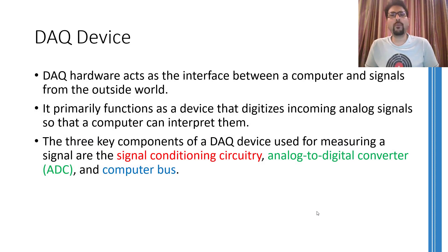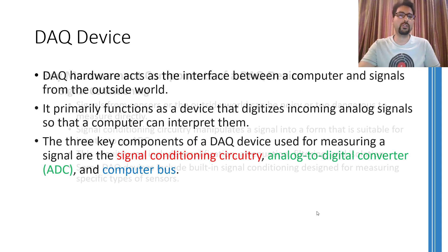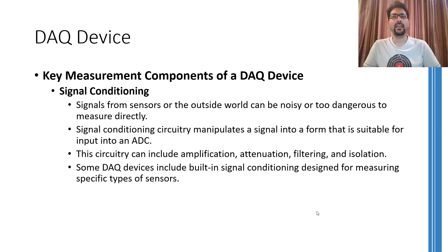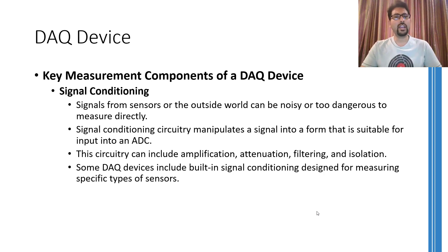Let me explain each component of the DAC device in a bit more detail. There are three major operations a DAC device has to perform. The first one is signal conditioning. The second one is conversion from analog to digital or from digital to analog domain. And the last one is routing data to and from the computer. In the signal conditioning portion, the analog data generated by the sensor might be corrupted, noisy, or in a form that cannot be directly processed. Therefore, the signal conditioning portion utilizes circuitry to convert the incoming signal into a form suitable for analog-to-digital conversion.